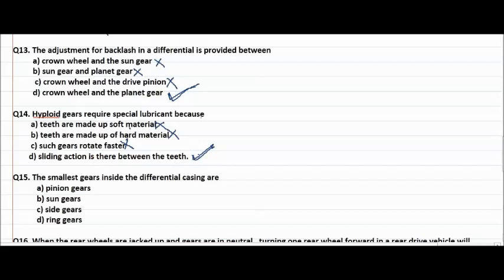The smallest gear inside the differential casing are sun gears? No. Side gears? No. Ring gear? No. Pinion gears is the right answer. The smallest gear inside the differential casing are the pinion gears.